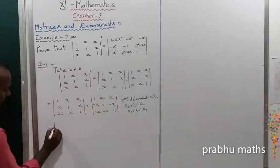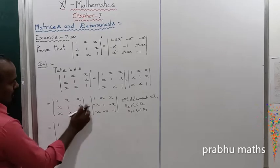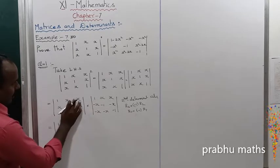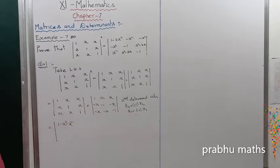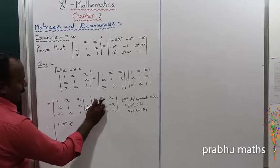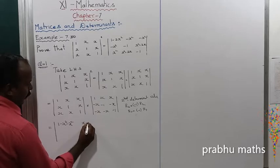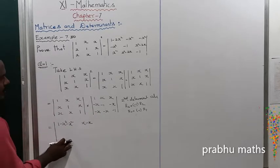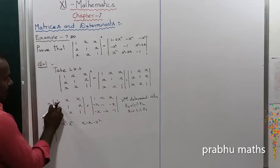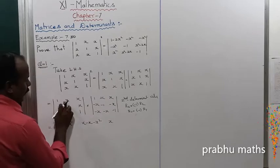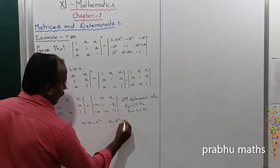So next we get the answer. The first row: 1 into 1 is 1, then minus x, next also minus x, minus x squared. Next: 1 into x is x, then x into minus 1, x into minus x. Next: 1 into x equals minus x squared, then 1 into x; x into x equals minus x squared, then x into minus 1 is minus x.